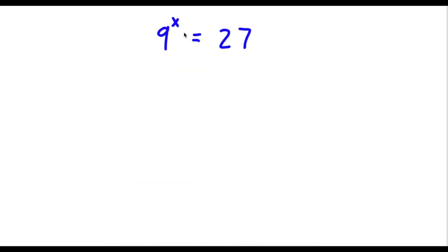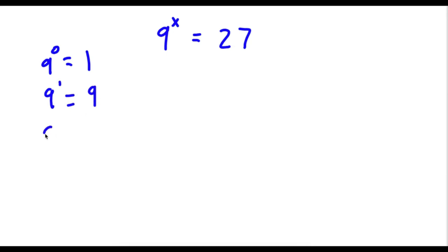So I have 9 to the power of x is equal to 27. And this may seem like a challenging problem because if you notice, 9 to the power of 0 is equal to 1, 9 to the power of 1 is equal to 9, and 9 to the power of 2 is equal to 81. Meaning x in this case would be either a fraction or a decimal, because it can't be a whole number.